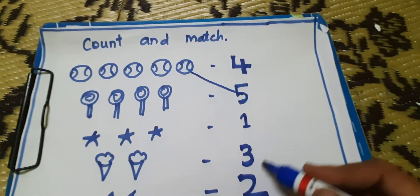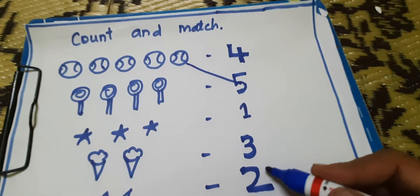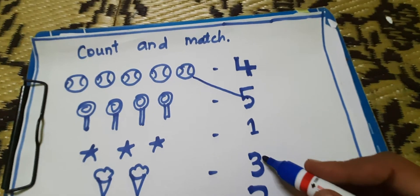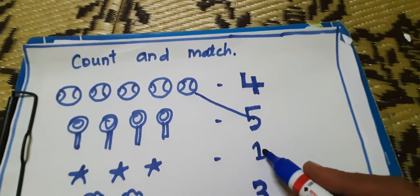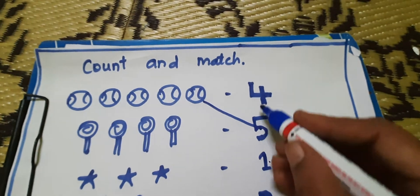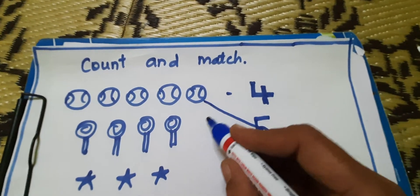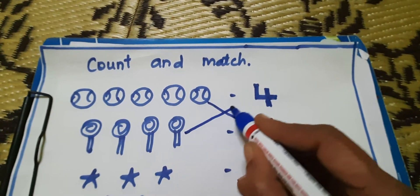Where is 4? You search. Is this 4? No. Is this? No. Is this 4? No. Where is 4? Here. Match it. 4 lollipops. 4.